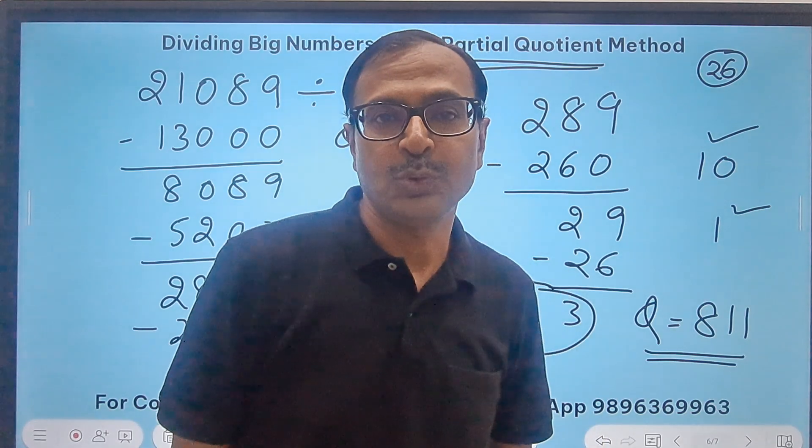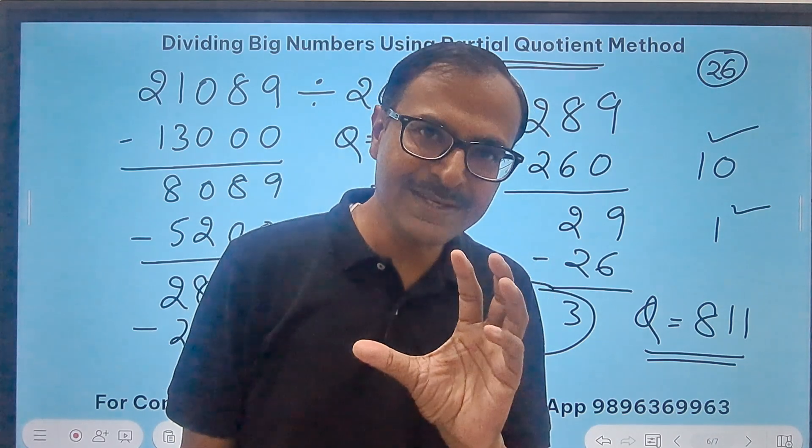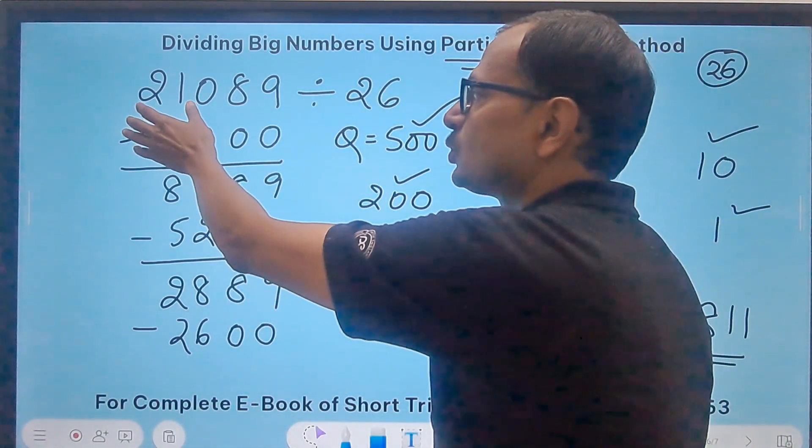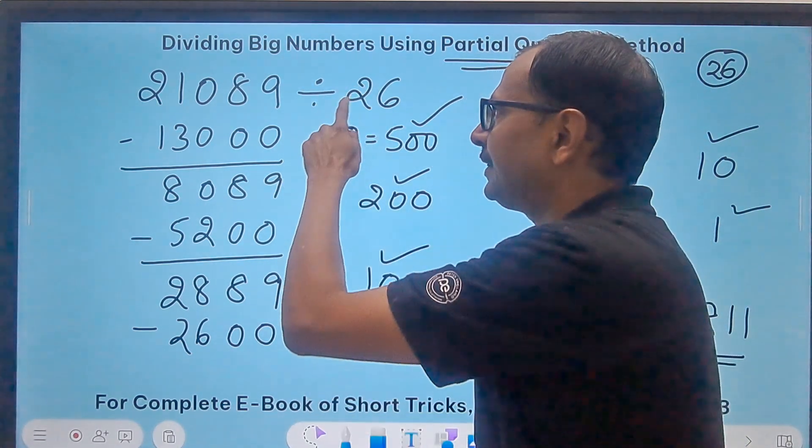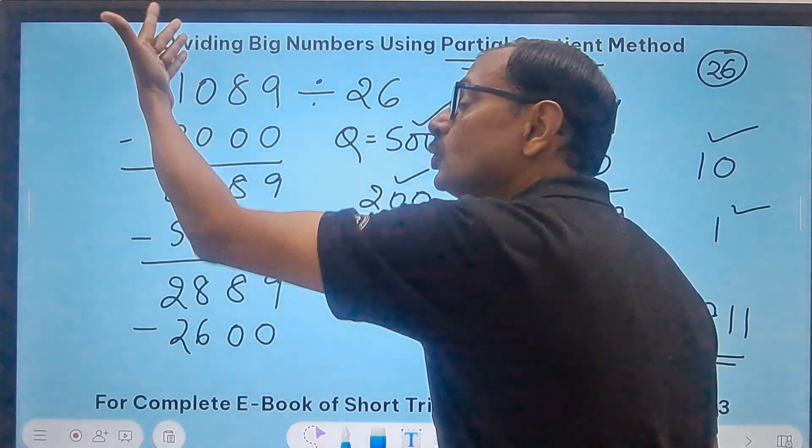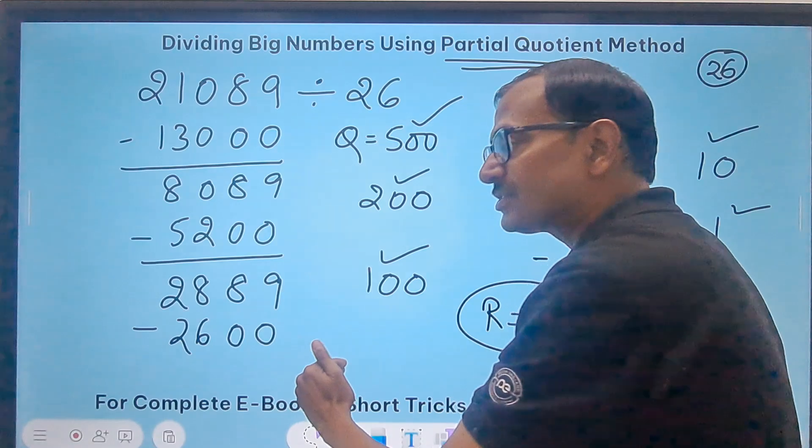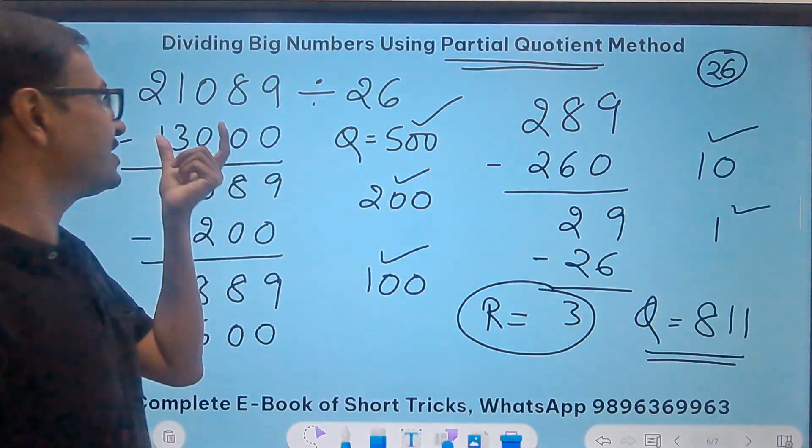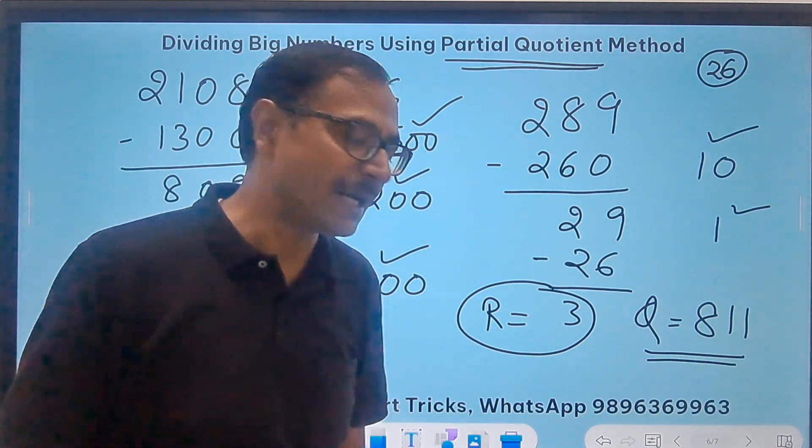The method might look a little lengthy, but it is easy. When you have easy steps, they don't consume time. We are working according to our convenience, not finding a multiple of 26 which gets closest to 210. I wanted to be in my comfort zone, so I did 26 into 5 which is easier for me. The closer you get, the fewer steps you need. It depends on your mastery of how quickly you can find that number. If it doesn't work, you can do 26 into 1 and still get the correct answer.